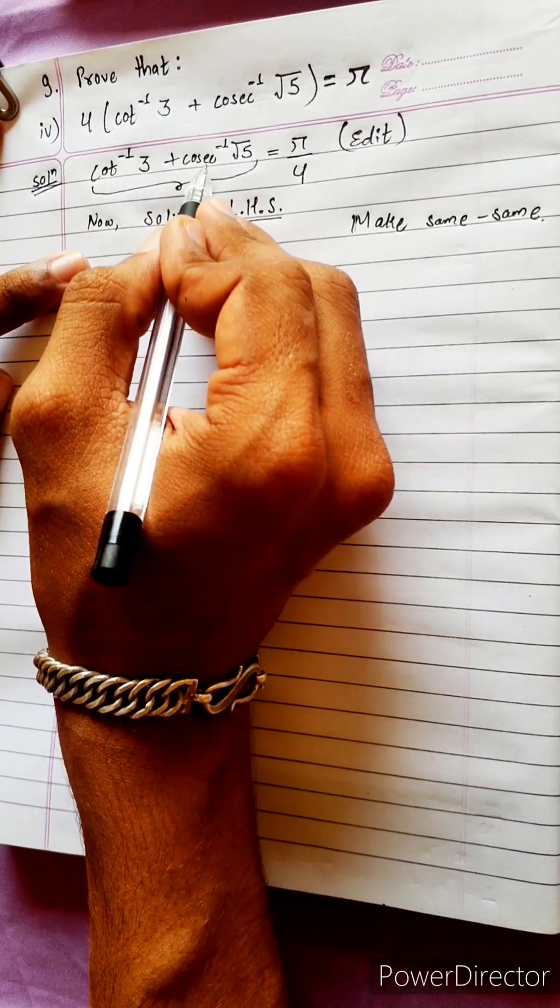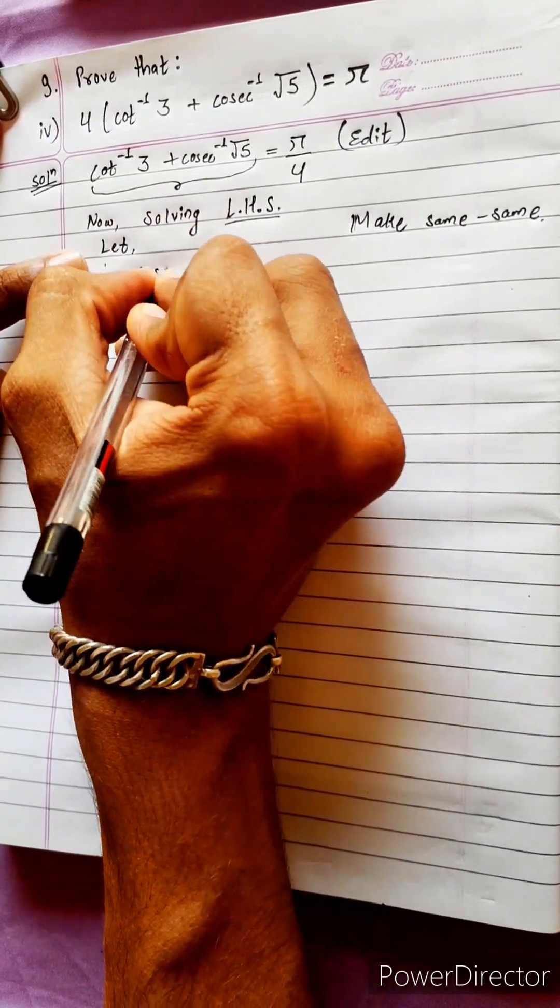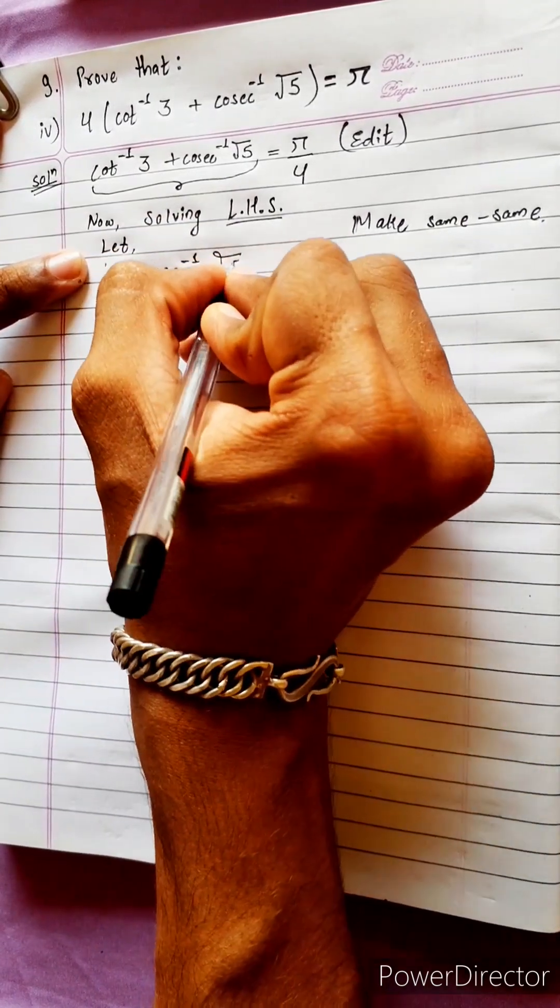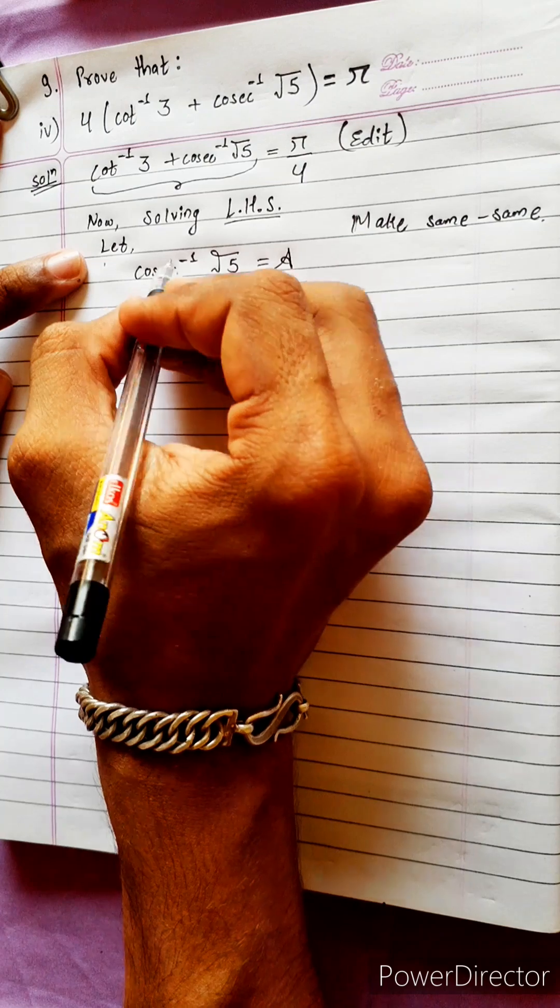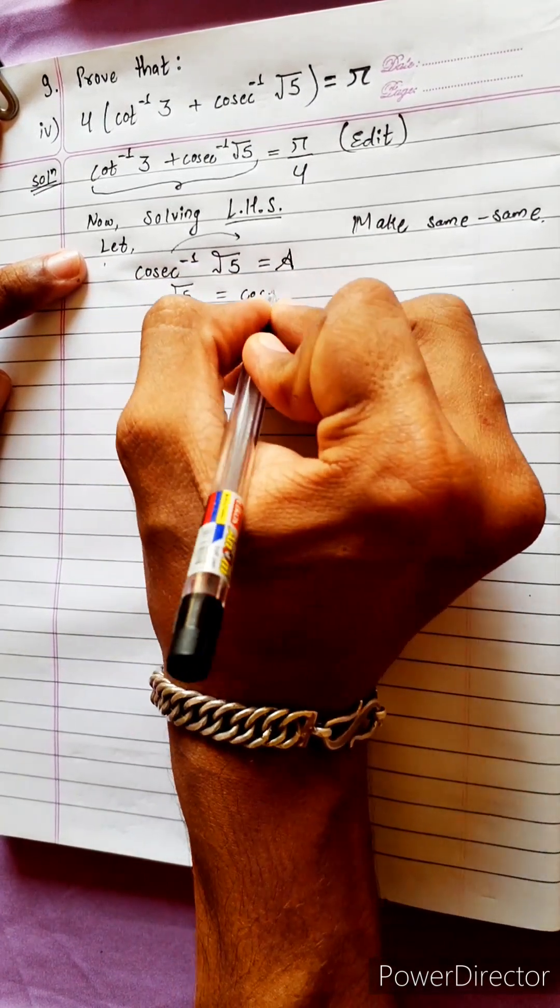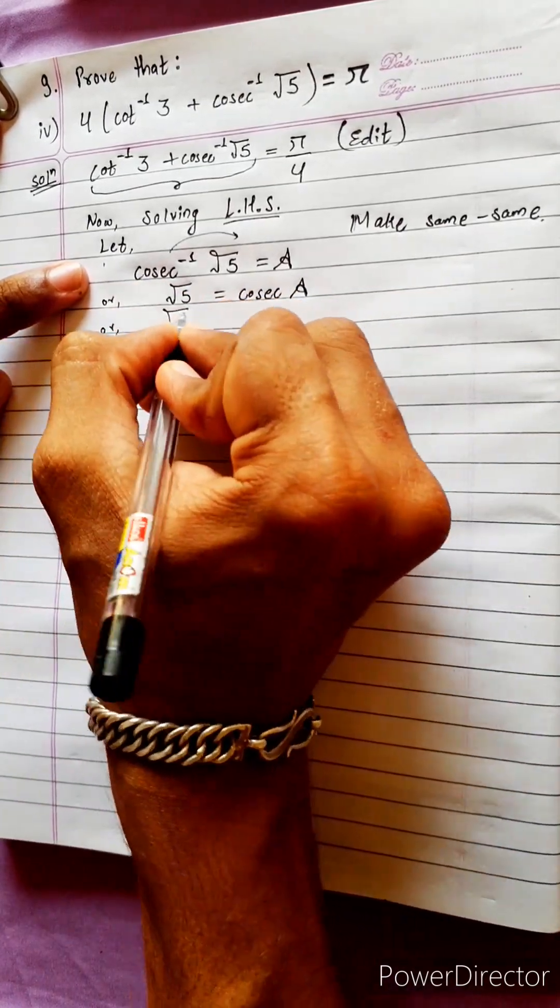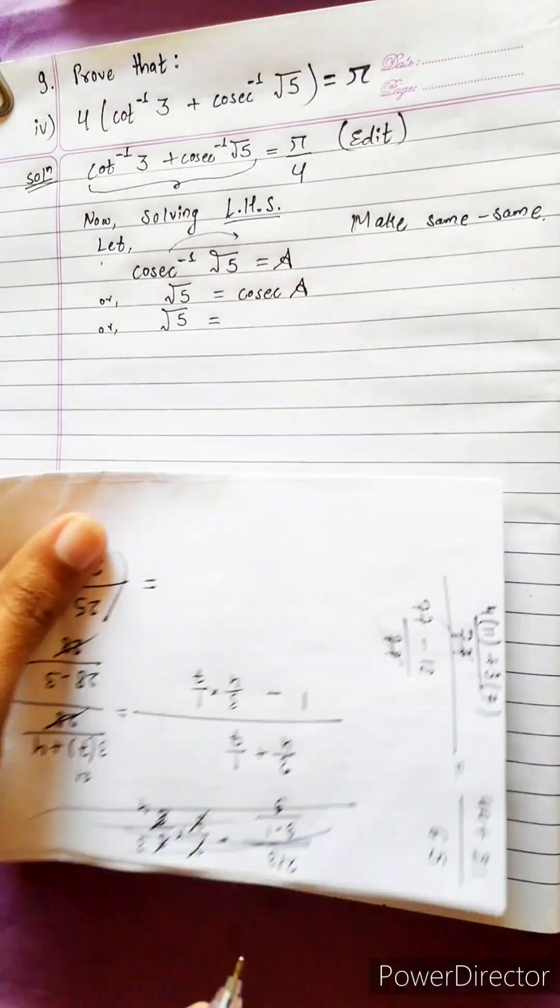We need to change the cosec. Let's change the cosec inverse under root 5 equals to A. This is the cosec. We need to transfer the cosec. Under root 5 equals to cosec A. Now, the cosec is a formula.